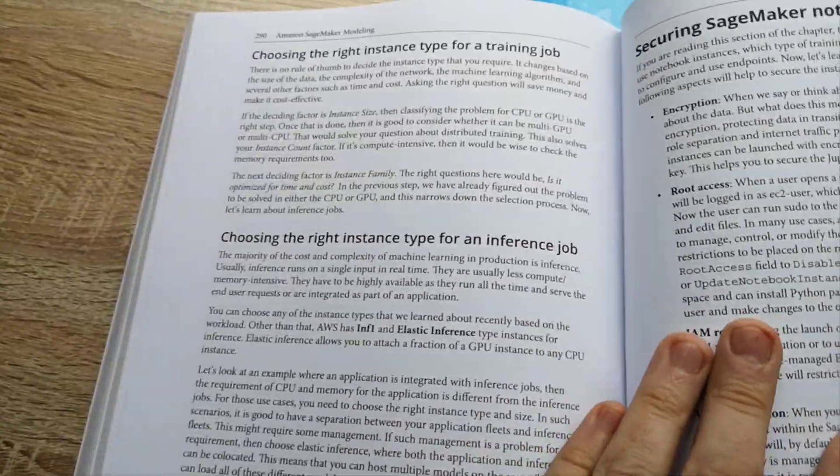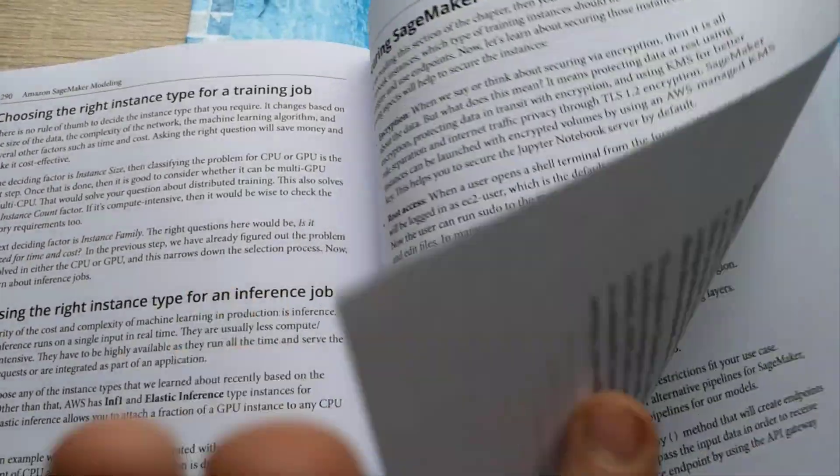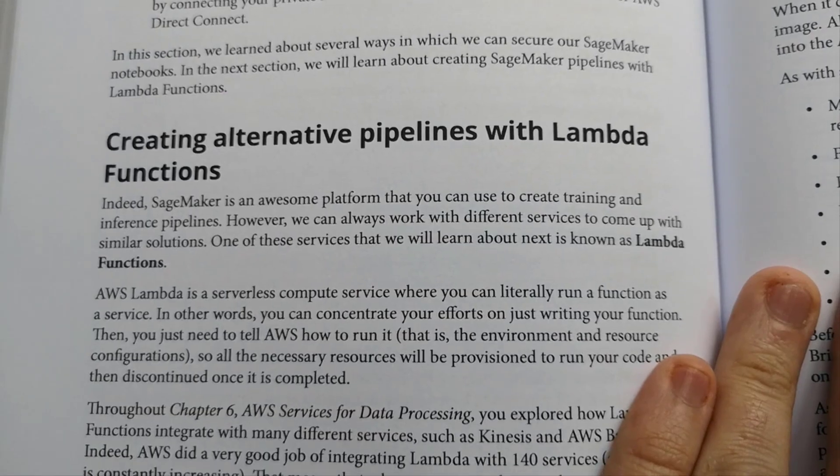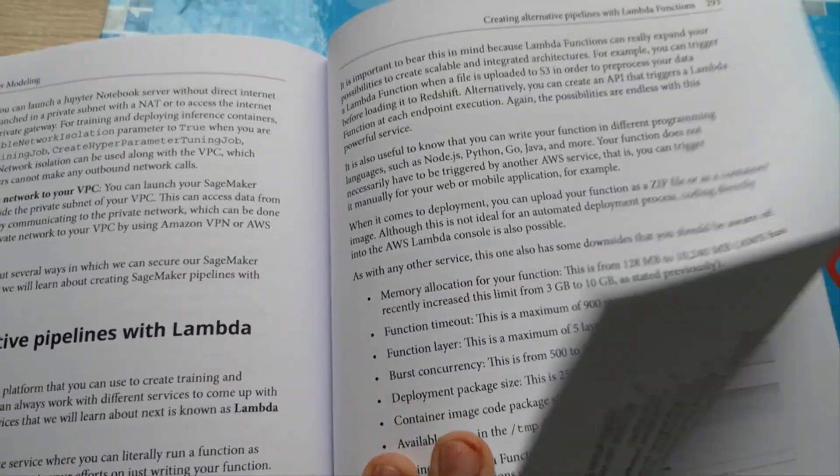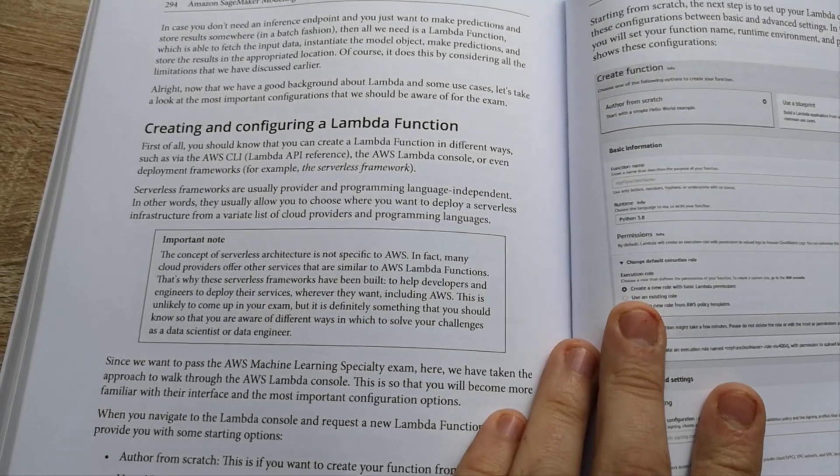What I am reading right now, creating alternative pipelines with lambda function. Remember, what lambda can do, what features lambda function has, and cases where lambda could be used and where not.